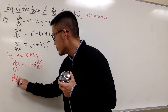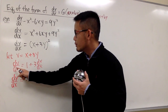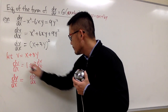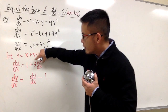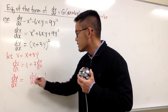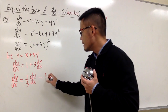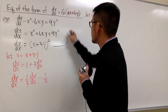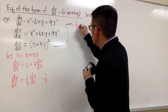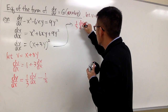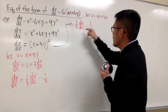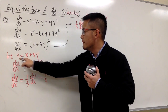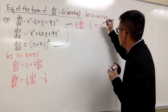Isolating dy/dx: we get dv/dx minus 1, then divide everything by 3, giving dy/dx = (1/3)dv/dx − 1/3. This represents dy/dx. Setting it equal to the right-hand side, where the input is v squared, we have (1/3)dv/dx − 1/3 = v².